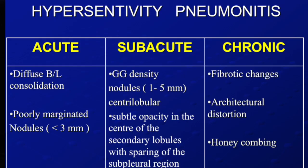You have a positive history, so you need history. Here you don't need the pathologist because you are not going to do a lung biopsy. But you need BAL — bronchoscopy with lavage — and you need the pathologist. That is why it is a multidisciplinary approach. And chronic HP, as I told you, goes into fibrosis.